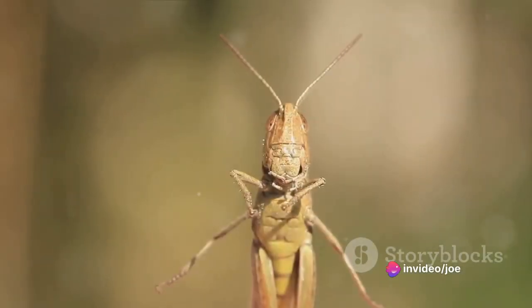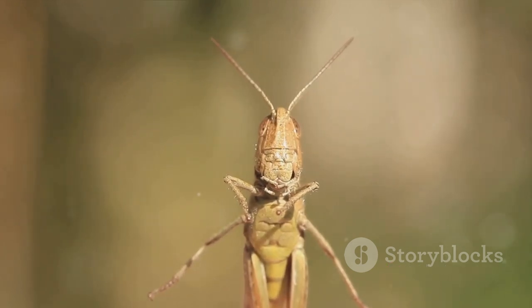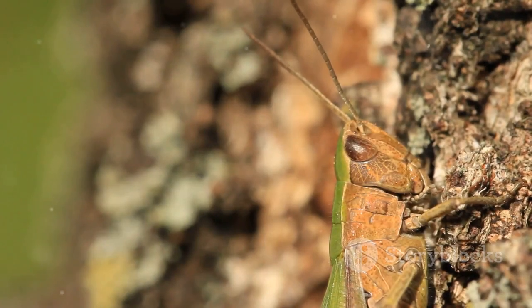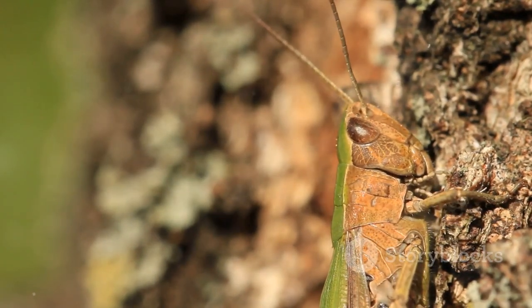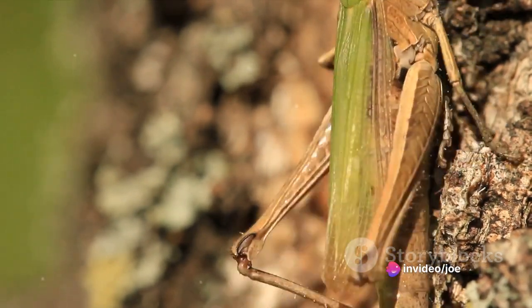Did you know grasshoppers use their bellies to hear? That's right, these fascinating creatures have a unique anatomy that sets them apart from many other insects. Instead of having ears located on their heads like humans, or on their legs like some insects, grasshoppers have their auditory organs nestled neatly in their bellies.